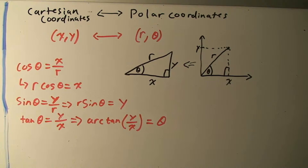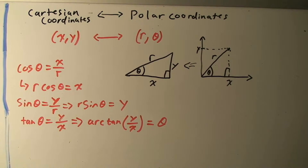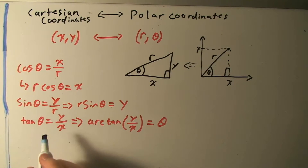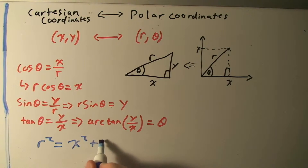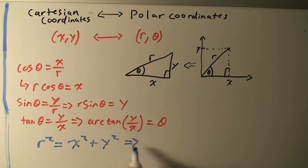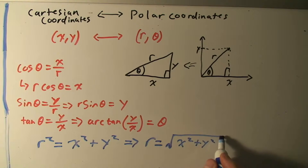If we want r — the length of the hypotenuse — we can use the Pythagorean theorem, which says that the hypotenuse squared equals the sum of the two legs squared: r² = x² + y². So r is going to be equal to the square root of x squared plus y squared.